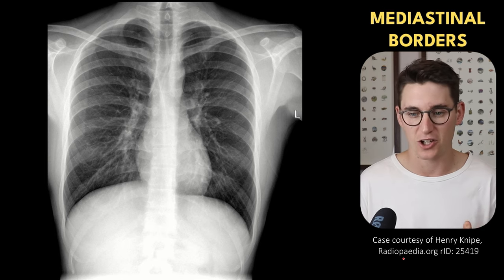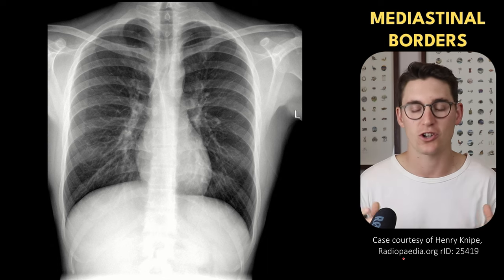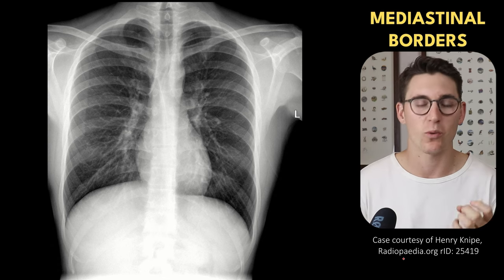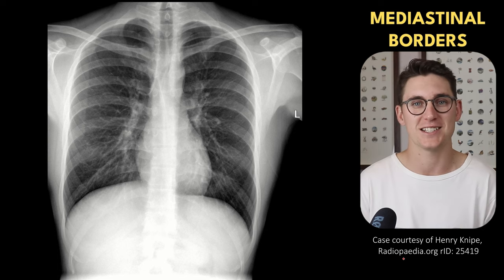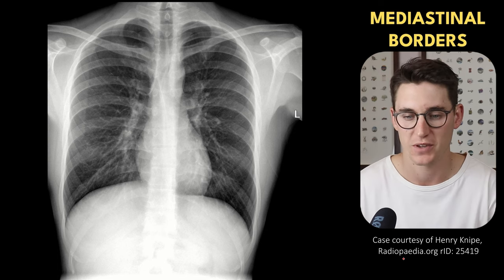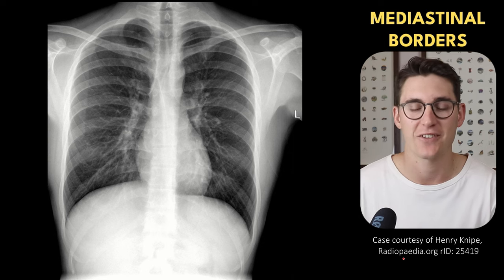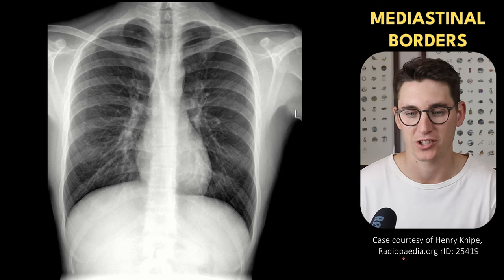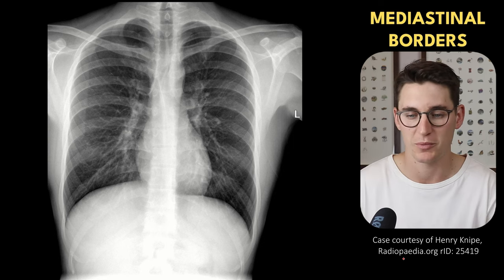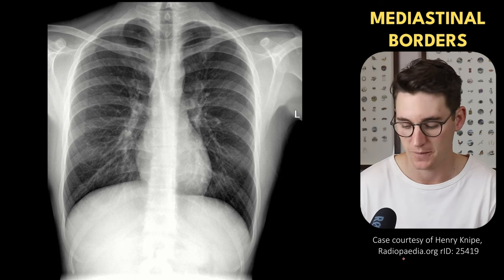Let's start how I like to look at a chest x-ray — first looking at all the various contours and lines, knowing what is normal, and if you see any abnormalities there you can then focus your search. So let's start by looking at the mediastinum. We'll start on the left hand side of the patient and identify the borders of the mediastinum and which structures make up those borders.